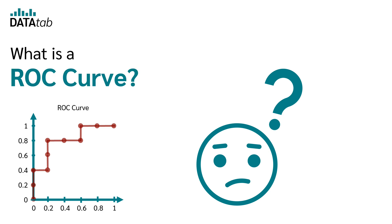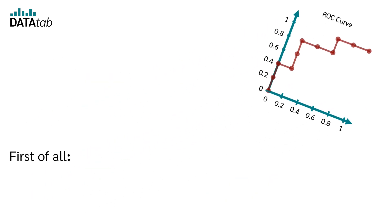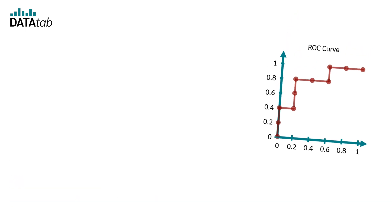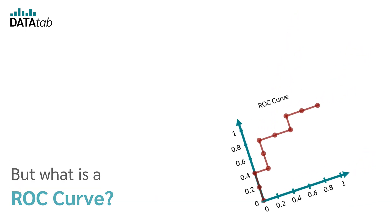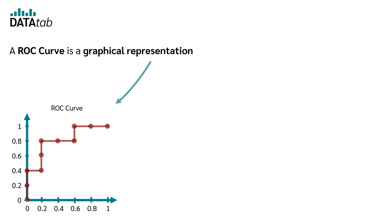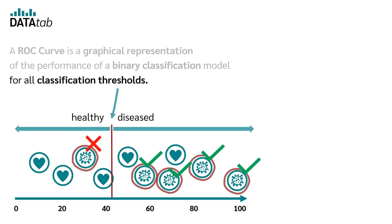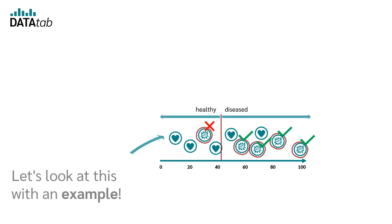What is a ROC curve? ROC stands for Receiver Operating Characteristic. A ROC curve is a graphical representation of the performance of a binary classification model for all classification thresholds.